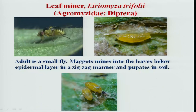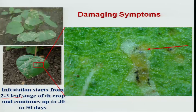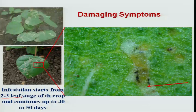Among the important pests occurring on cotton — both sucking pests and bollworms — Liriomyza is one key pest. It occurs once the crop reaches the two-to-three leaf stage and causes damage by remaining inside the two leaf layers.